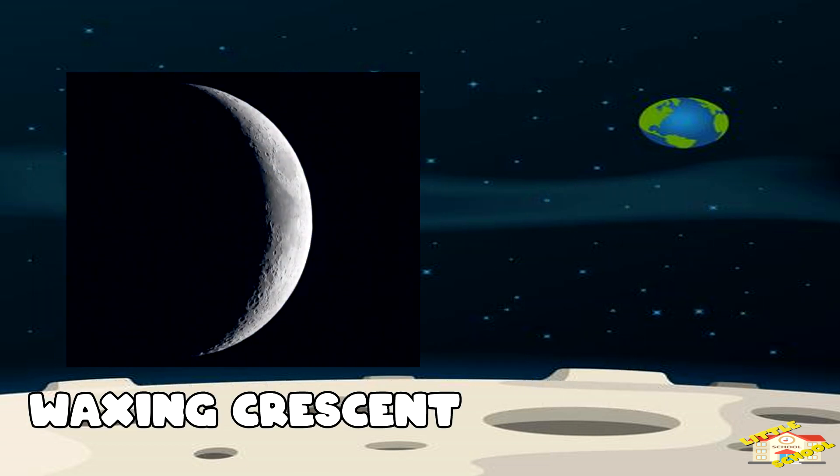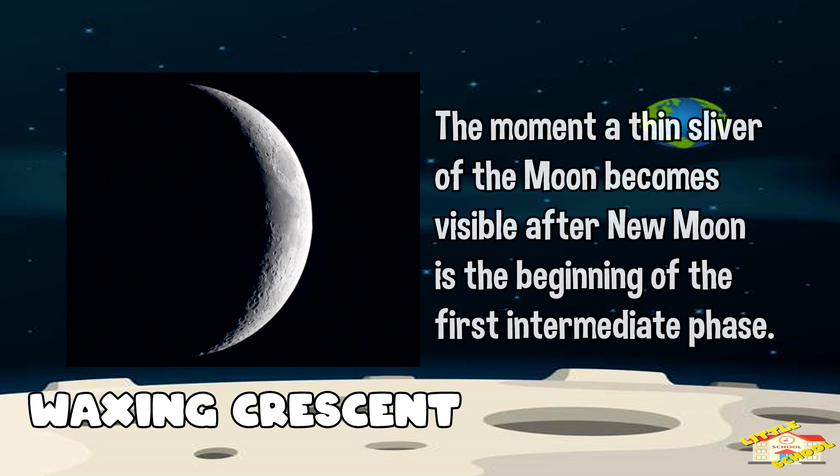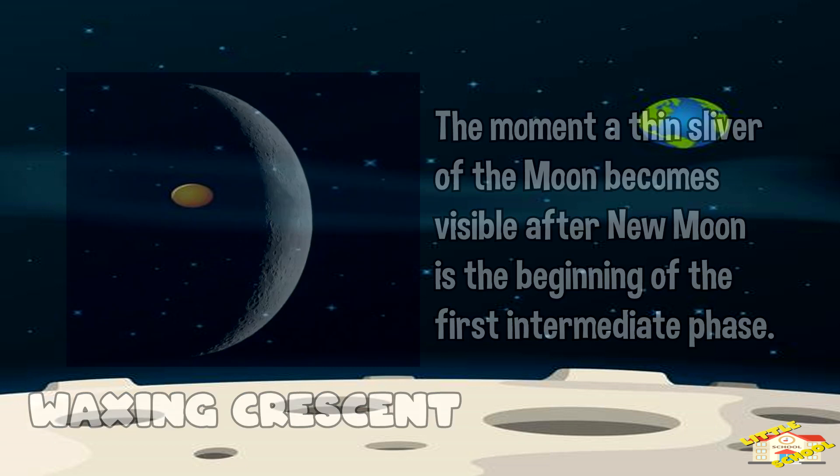The waxing crescent moon. The moment a thin sliver of the moon becomes visible after new moon is the beginning of the first intermediate phase, known as the waxing crescent moon.